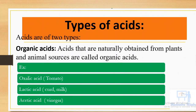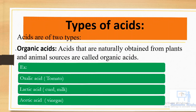Next topic is types of acid. Mainly, there are two types of acid. The first one is organic acid. Organic acids are obtained naturally — for example, oxalic acid present in tomato, lactic acid present in curd and milk, and acetic acid present in vinegar. These are examples of organic acid.